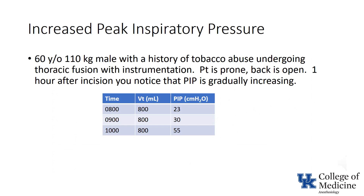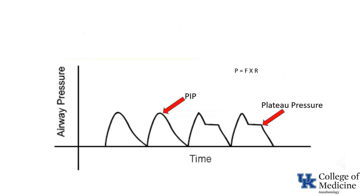Back to the clinical question. The issue was how to deal with a patient whose peak inspiratory pressures had increased from 23 to 55 centimeters of water over the course of two hours. Use of the two different pressures — peak inspiratory pressure and plateau pressure — allows calculation of two different values for compliance.